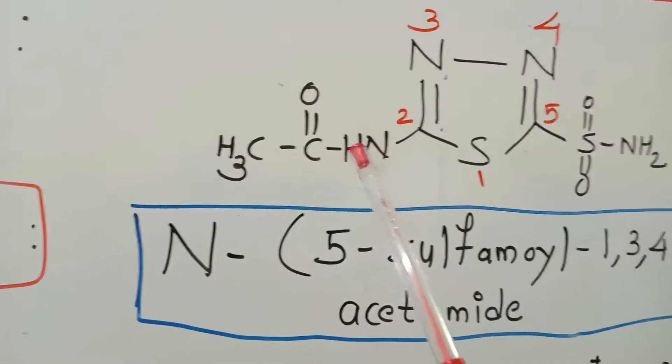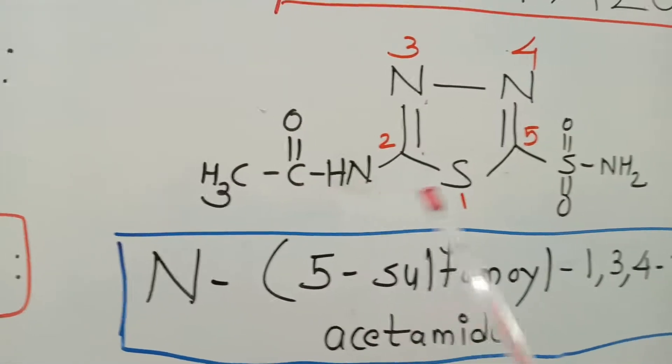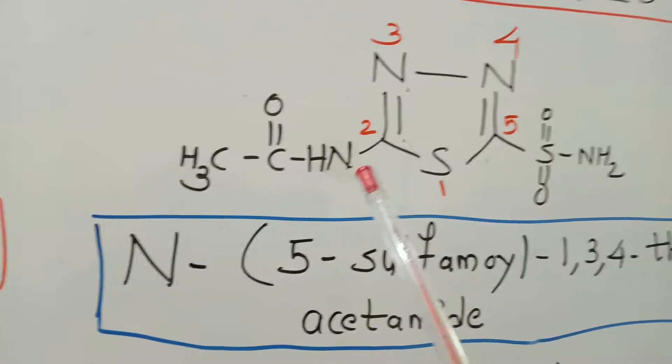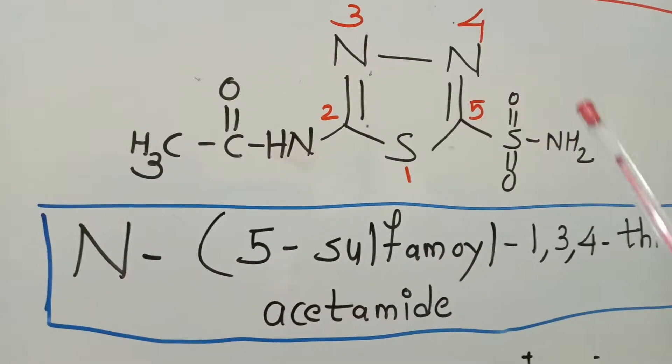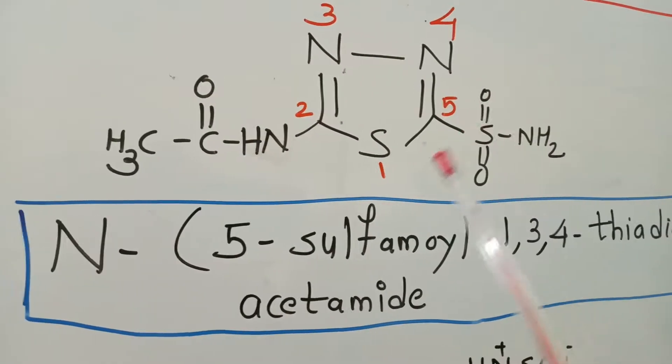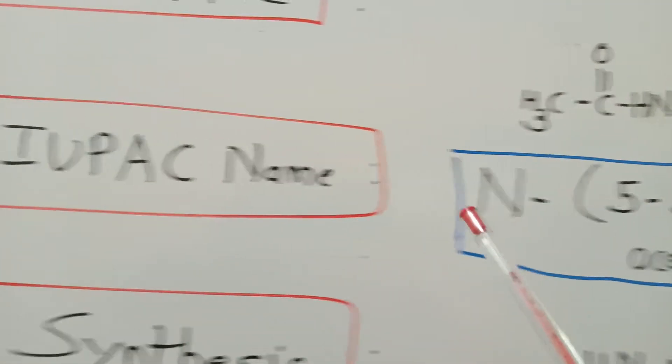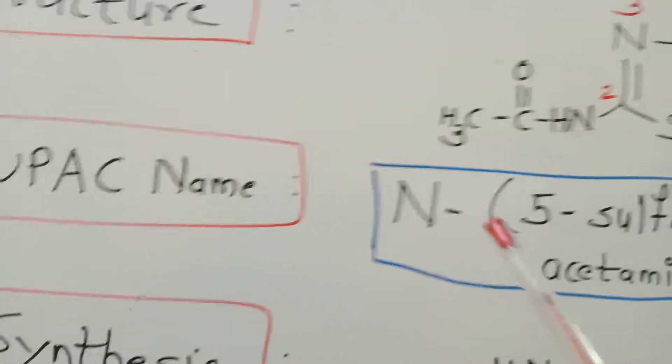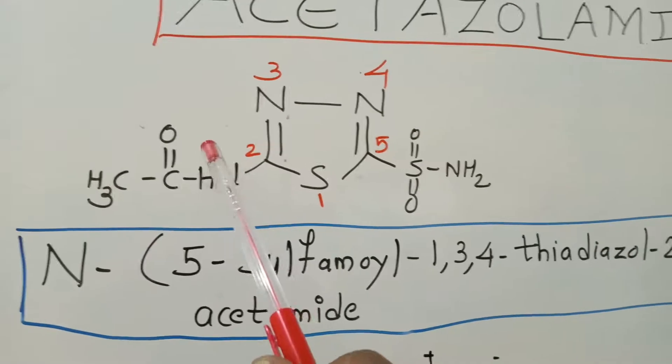So, the basic moiety present over here is the acetamide nucleus. On the nitrogen of acetamide, there is a substituent group with a heterocyclic ring which is substituted at the 5 position. So, the IUPAC name of this compound will be on nitrogen: